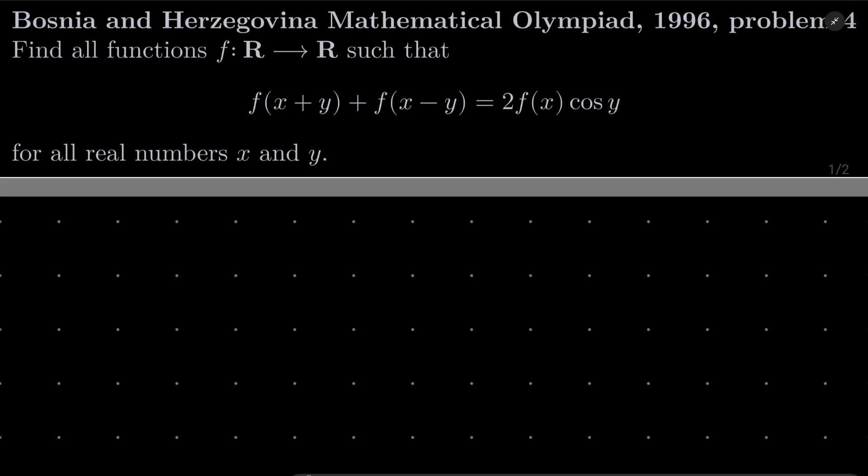Hello friends. In this video I'd like to solve the following problem from the Bosnia-Herzegovina Mathematical Olympiad 1996, problem number 4. We want to find all functions f from the set of real numbers into itself, such that f(x+y) + f(x-y) equals 2·f(x)·cos(y) for all real numbers x and y. So it's a nice problem combining trigonometry and functional equations.